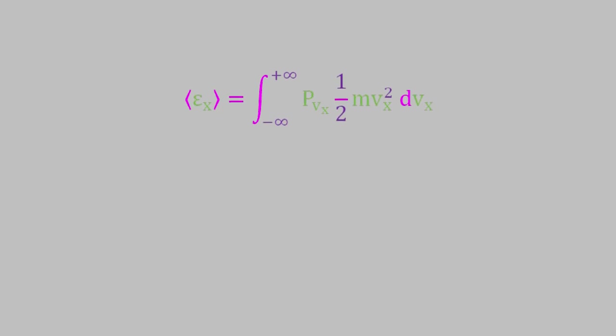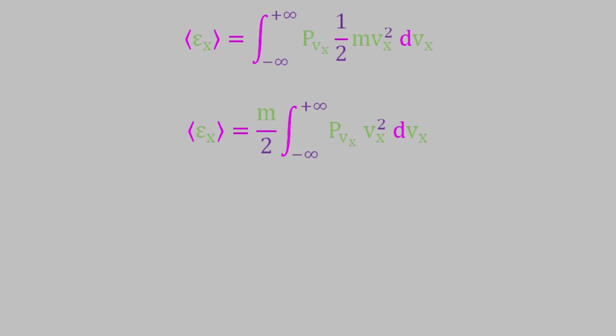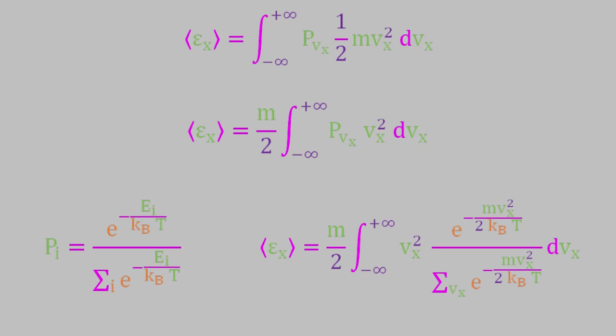Let's simplify this expression a bit by taking the mass and the factor of 1 half out of the integral. But wait. In the last video, we saw that the probability p can be expressed using this equation. So let's plug that into our formula.